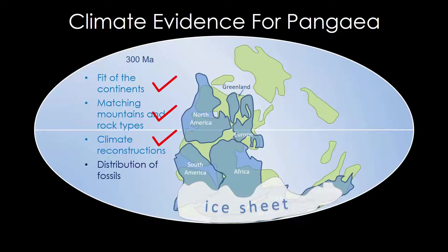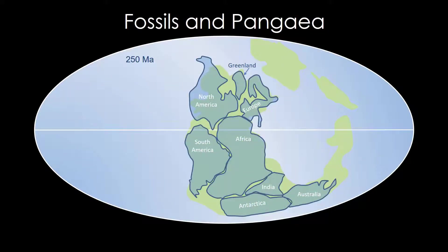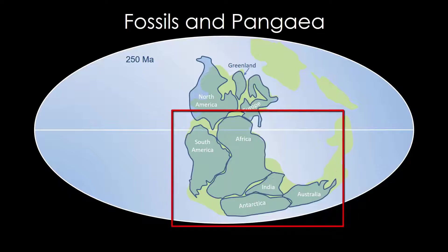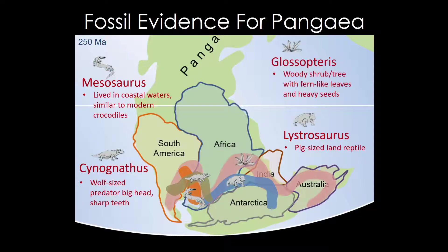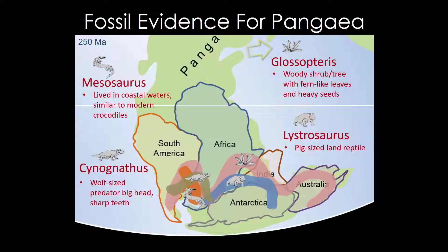Finally, what about fossils? How can they be used to support the concept of continental drift? Let's jump forward about 50 million years and examine what was going on in the southern half of Pangaea. We are going to consider four different fossil species found on multiple continents. They represent two land-dwelling reptiles, another that lived in coastal environments, and a plant with seeds that were too heavy to be carried great distances by winds. Just as modern-day crocodiles, wolves, and pigs didn't swim across oceans, the only way to find the same organisms on different continents was to have a single giant landmass so that all the organisms could move easily between locations. When the continents split apart, the rocks containing the fossils were preserved on different sides of the oceans.